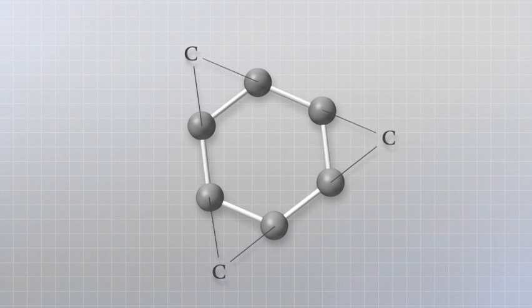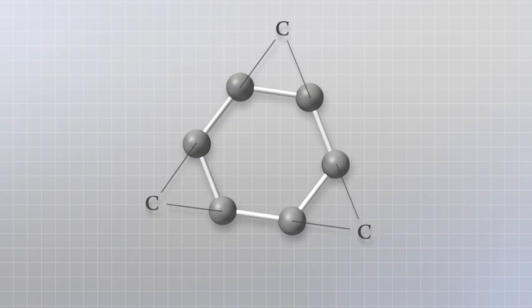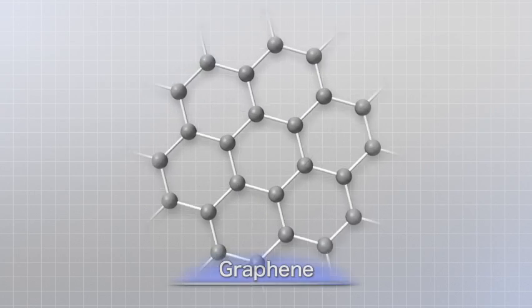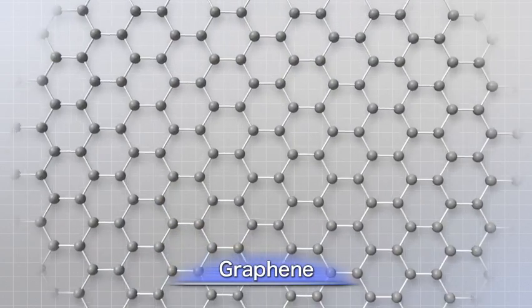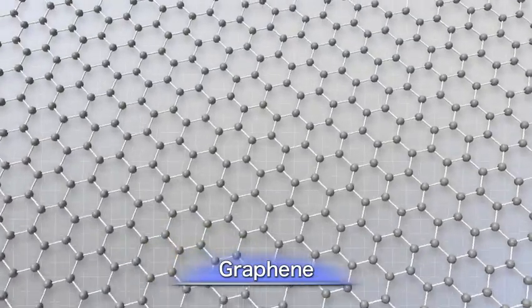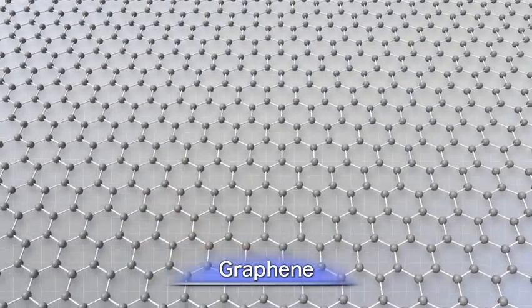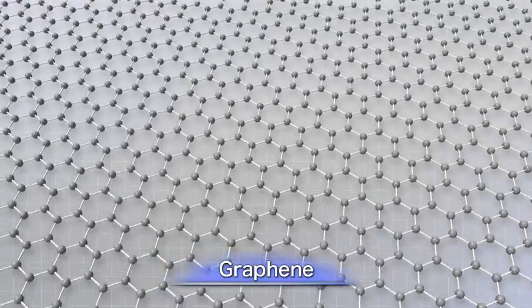In graphene, carbon atoms are connected in a honeycomb lattice and spread out in a sheet. Despite having outstanding electrical, optical, and mechanical characteristics, it has been difficult to produce this material precisely.